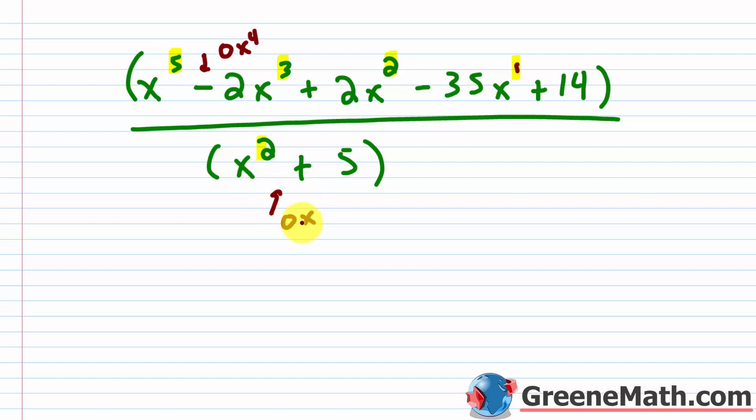Remember, 0 is special. If I multiply 0 by something, I get 0 — so 0 times x to the fourth power is just 0. And adding 0 to something doesn't change it. This is a little trick that we're going to use.